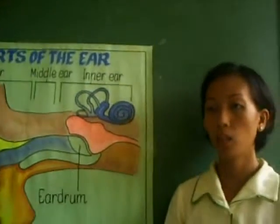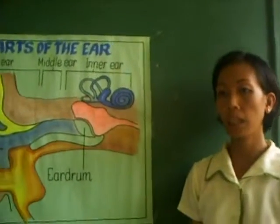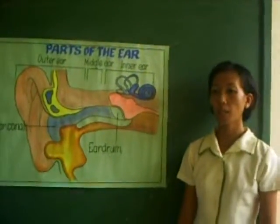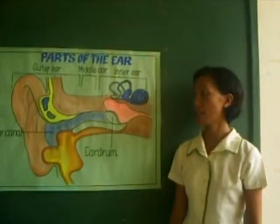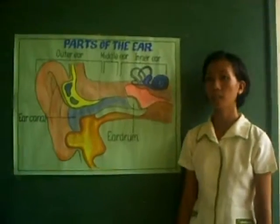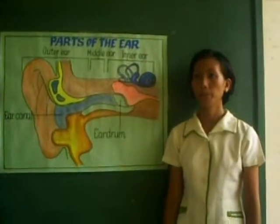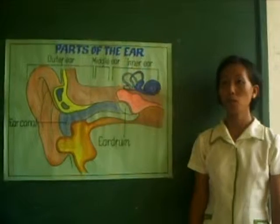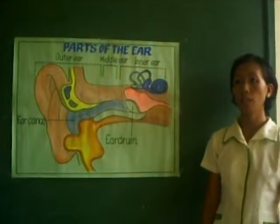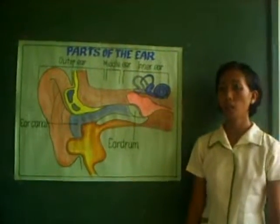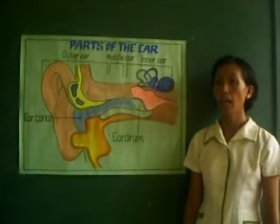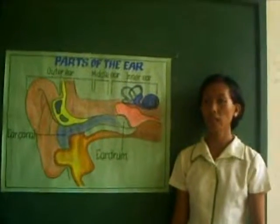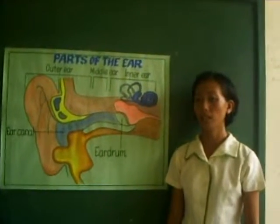The labyrinth is located deep within the temporal bone, just behind the eye socket. The three divisions of the bony labyrinth are the cochlea, the vestibule, and the semicircular canals.